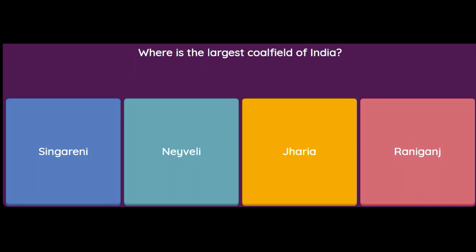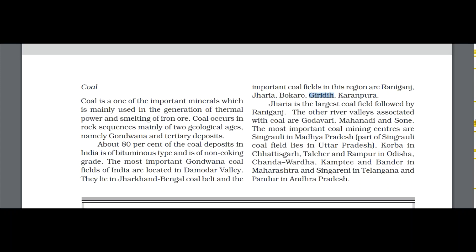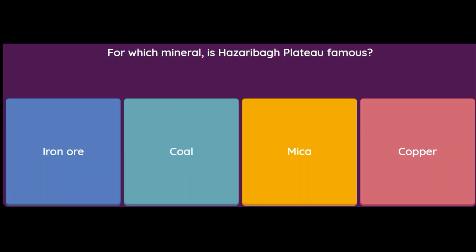Where is the largest coal field of India — Singareni, Neveli, Jharia, or Raniganj? The answer is Jharia, the largest coal field. From the book: coal is mainly used in generation of thermal power and smelting of iron ore. Jharia is the largest coal field, followed by Raniganj. Other river valleys associated with coal are Godavari, Mahanadi, and Son. Important coal mining centres include Singrauli in Madhya Pradesh, Korba in Chhattisgarh, Talcher and Rampur in Odisha, Chanda, Vardha, Kampti, and Bandhar in Maharashtra, and Singareni in Telangana and Pandur in Andhra Pradesh.